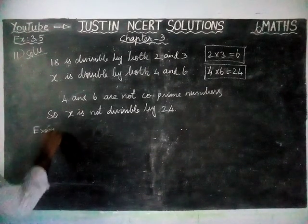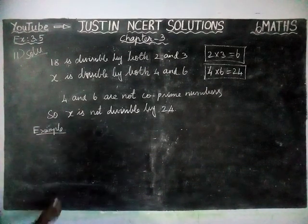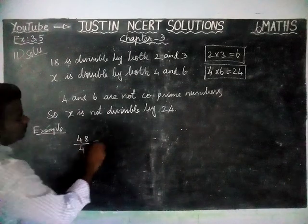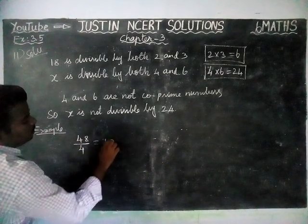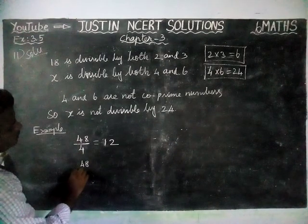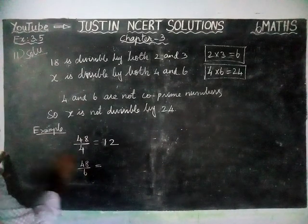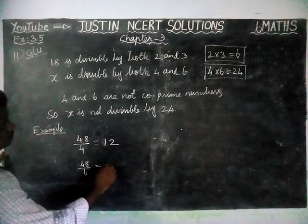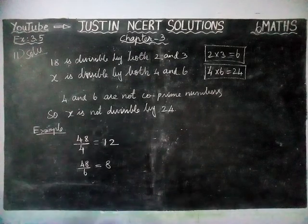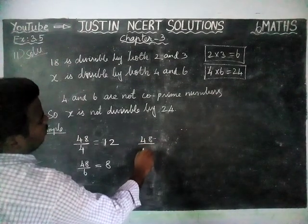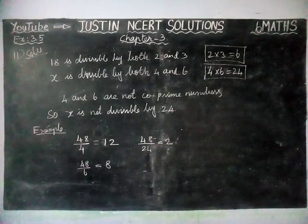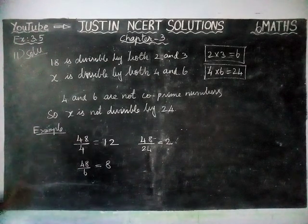Example 1: Take the number 48. 48 is divisible by 4, since 12 × 4 = 48. 48 is also divisible by 6, since 8 × 6 = 48. Checking: 48 ÷ 24 = 2, so 48 is divisible by 24. In this case, it is possible.